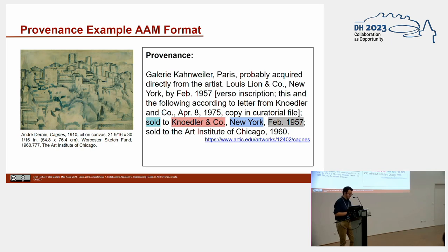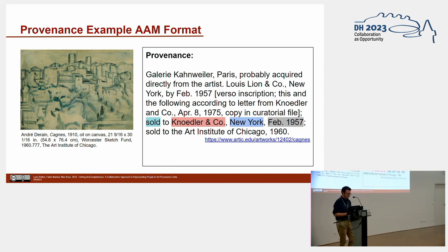Because of this, provenance information is unique. It is unique because it brings together works of art, people, time, locations, transactions, and historical events into a network of relationships. This is why provenance information is worth being analyzed on a large scale for network and spatial analysis. But so far, the information has only been recorded to be understood by humans and not by machines.